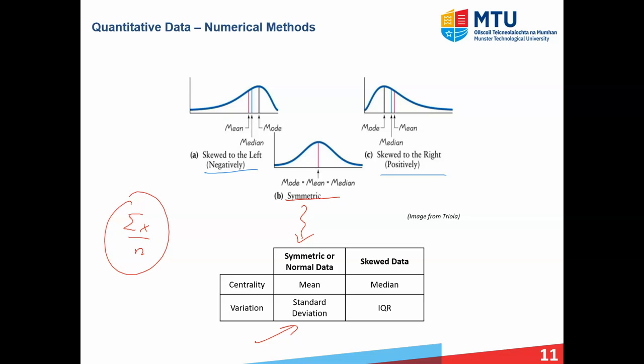In the case of skewed data — whether left or right skewed — we use the median and interquartile range as our measures of centrality and variation. The reason the median is used instead of the mean for skewed data is that very small or very large values will drag the mean towards them, whereas the median is not impacted as much because you're simply ordering the numbers and picking the middle one. The interquartile range is the third quartile minus the first quartile.